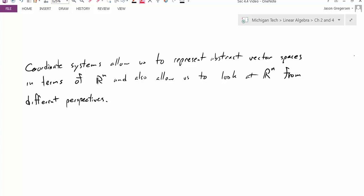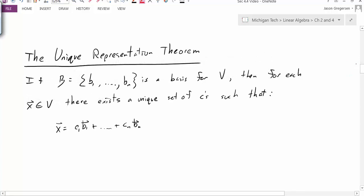We've introduced this topic of coordinate systems before, so let's quickly remind ourselves of one of the key theorems that's going to guide our discussion. The Unique Representation Theorem says that if we're given some basis, some set of basis vectors for some vector space V, then for each element of V, each vector x that's in V, there exists a unique set of constants c's such that x can be represented as a linear combination of those basis vectors.